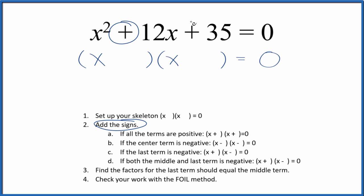Here both terms are positive, and when both terms are positive we put a positive in our skeleton like this. Next we want to find the factors for the last term, that's 35, and they should add up to the middle term.